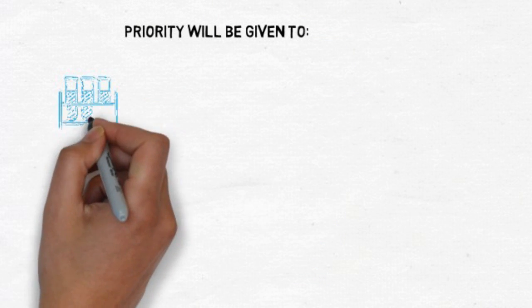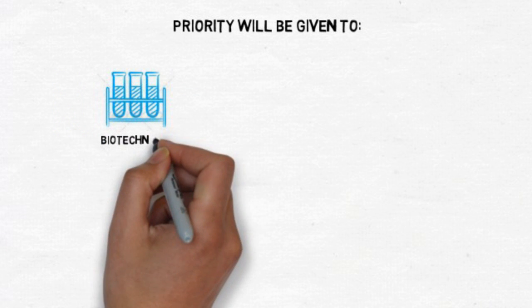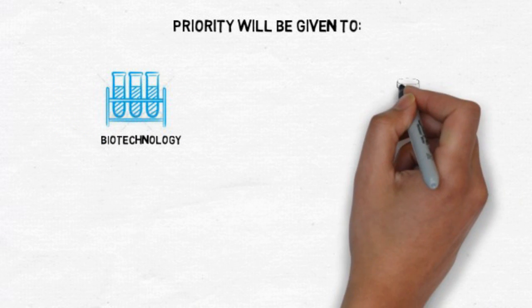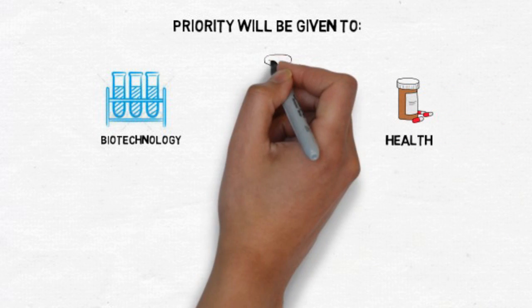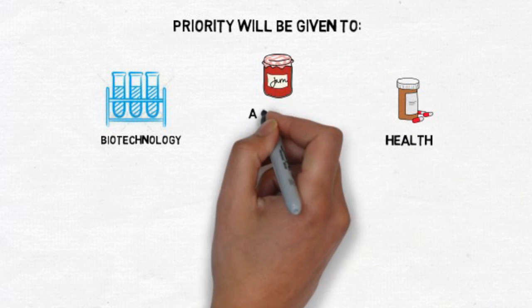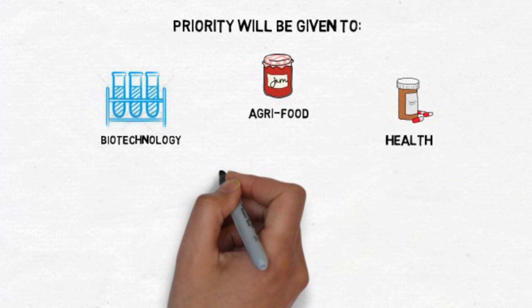While projects from all sectors are eligible, priority will be given to certain value chains due to their particular relevance to the Tunisian context. More specifically, Univenture will be focusing on the following sectors: